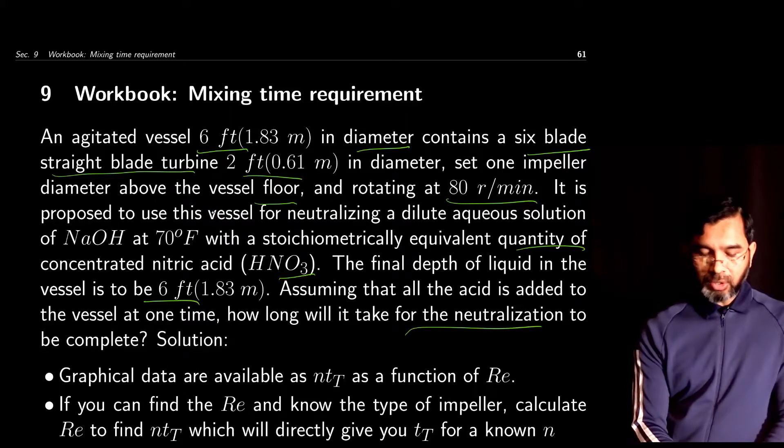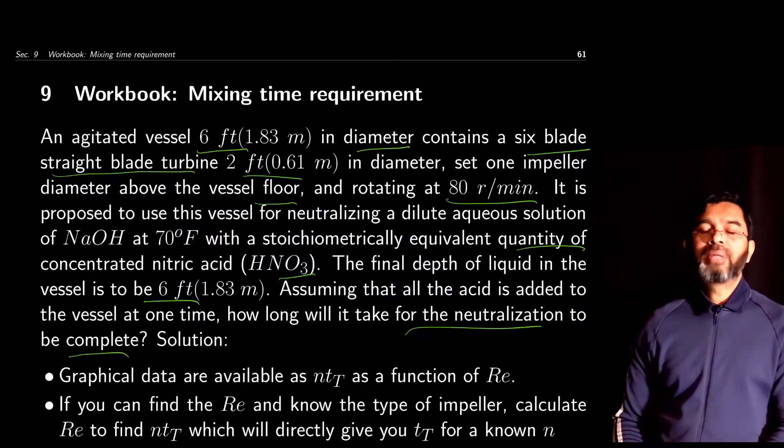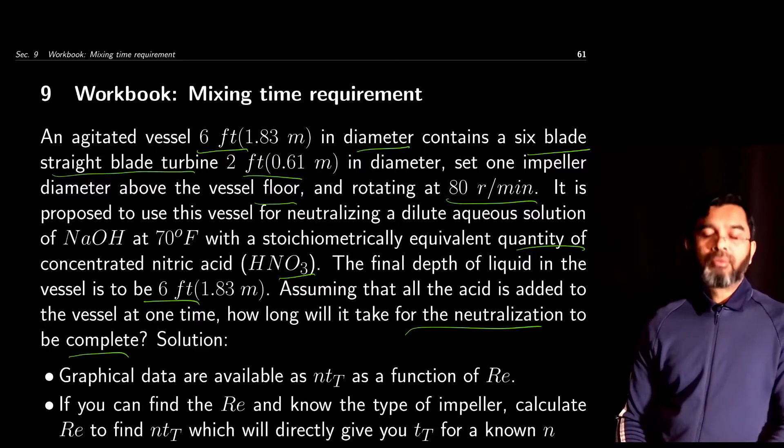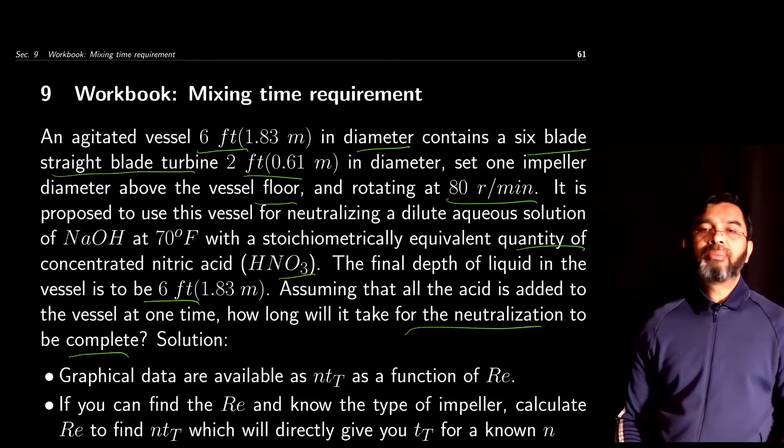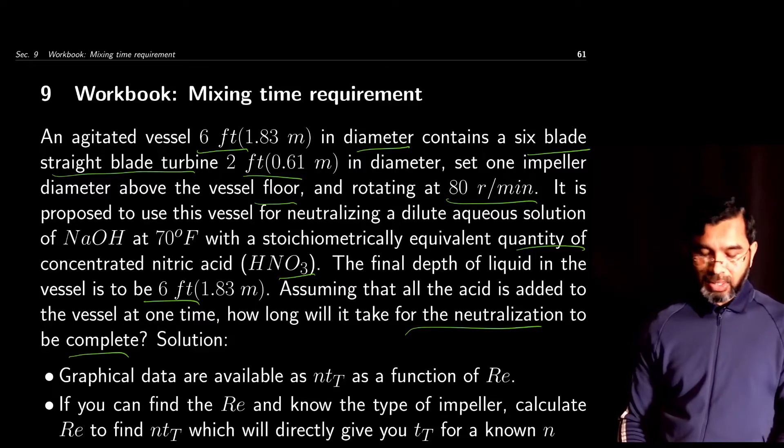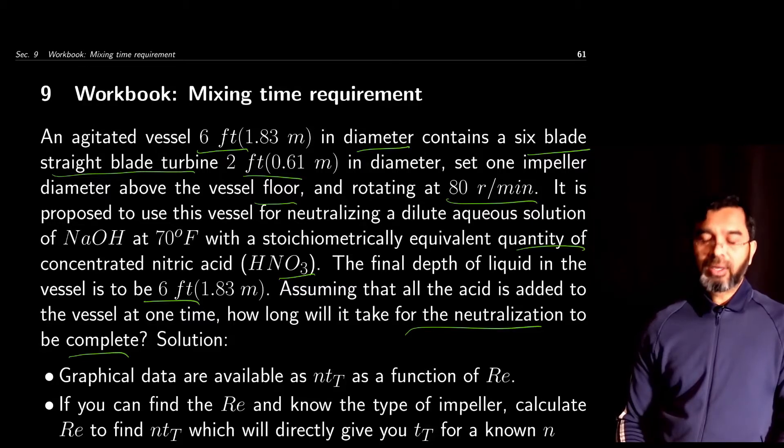We'll assume that the neutralization is complete when the mixing is complete. For this case, we'll use the relation between nTt and Reynolds number. So first we'll estimate the Reynolds number, and from there we'll get the nTt value.